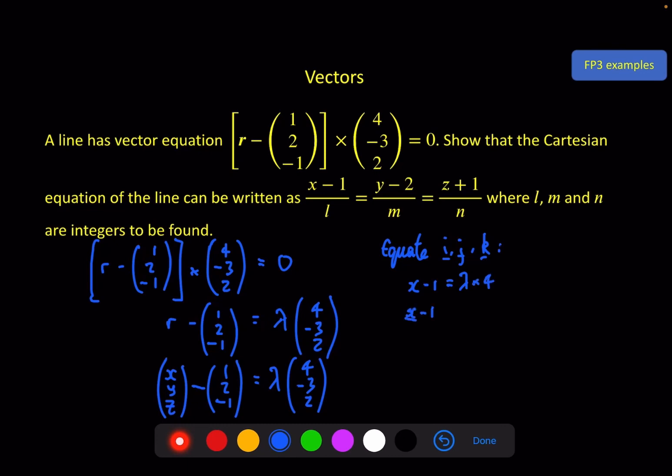To give us x - 1 must equal lambda times 4. So (x - 1)/4 equals lambda. And then we have y - 2 is equal to -3 lambda. So (y - 2)/(-3) equals lambda. And for the k, we've got z minus -1. So z + 1 must equal 2 lambda. So (z + 1)/2 equals lambda. So we've got (x - 1)/4 must be the same as (y - 2)/(-3) must be the same as (z + 1)/2, because they all equal this same lambda.